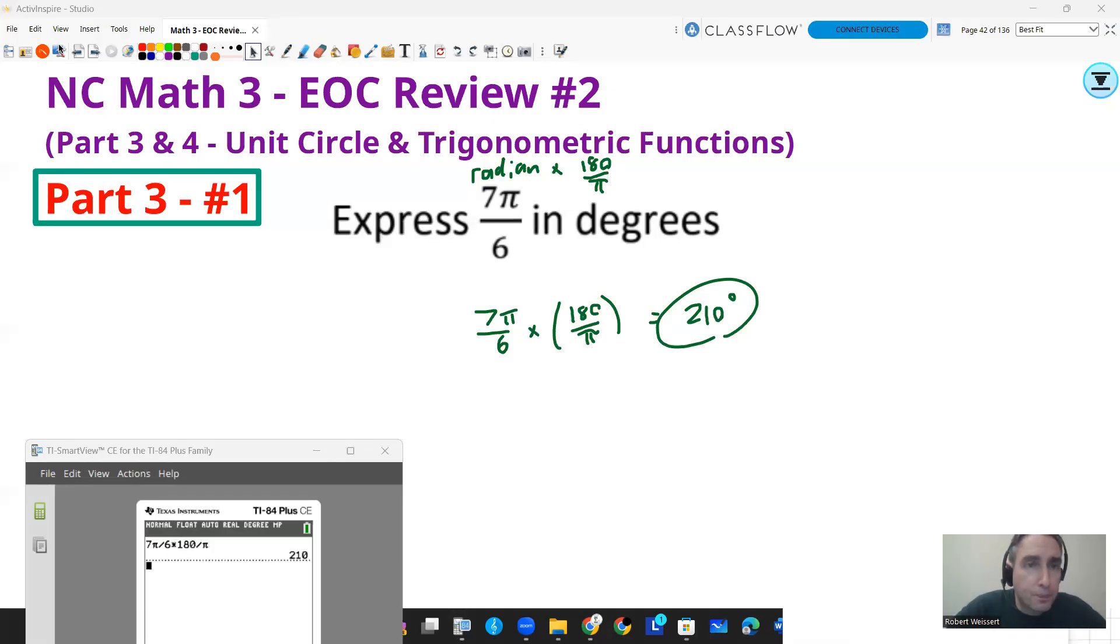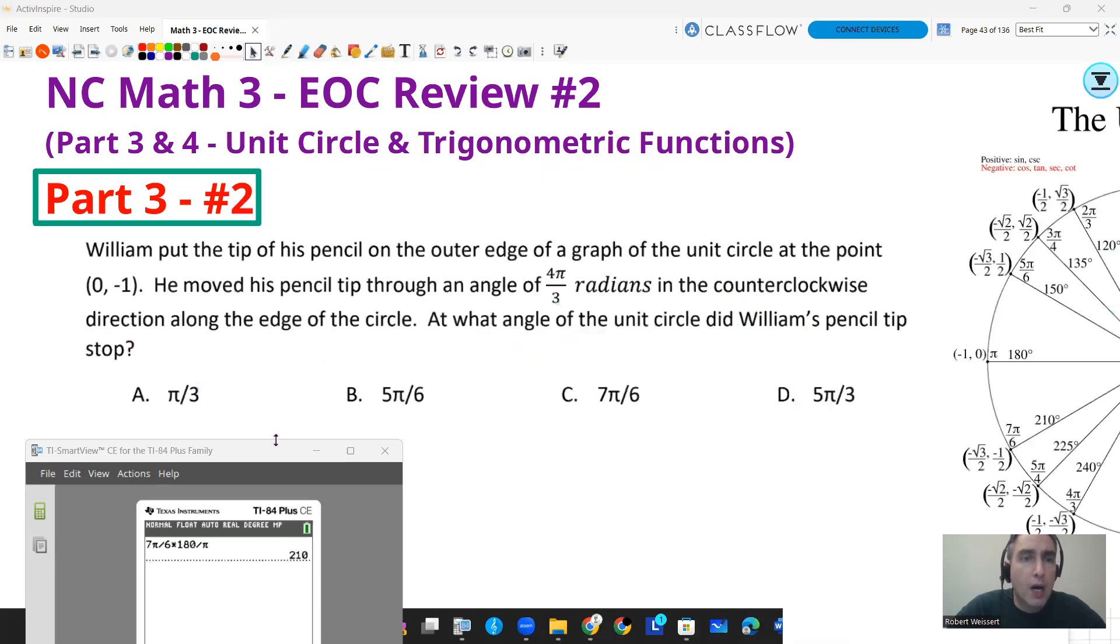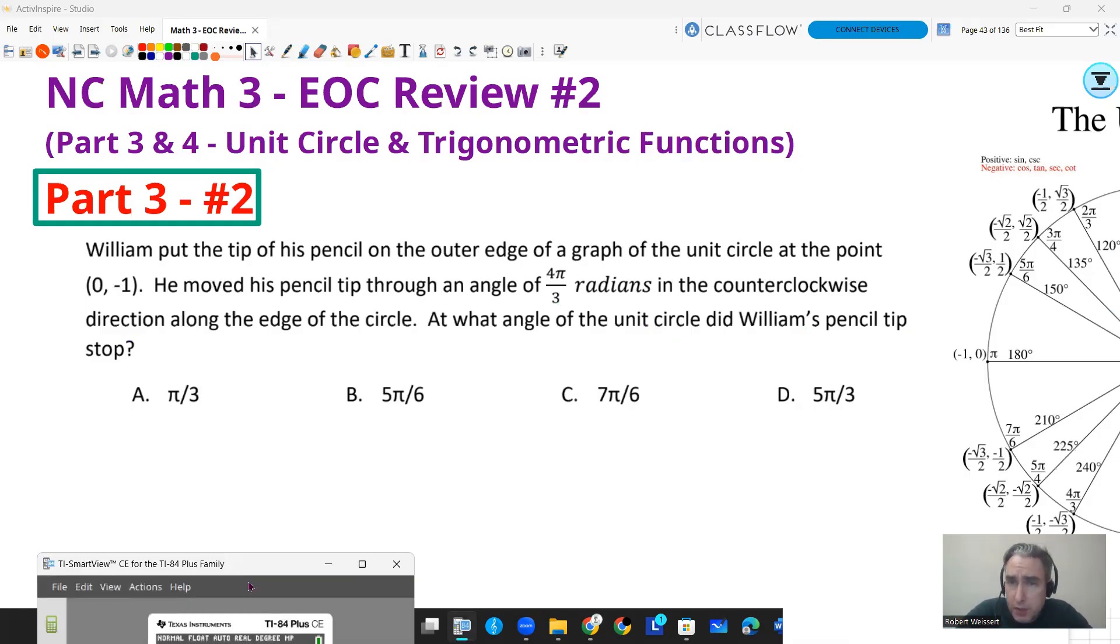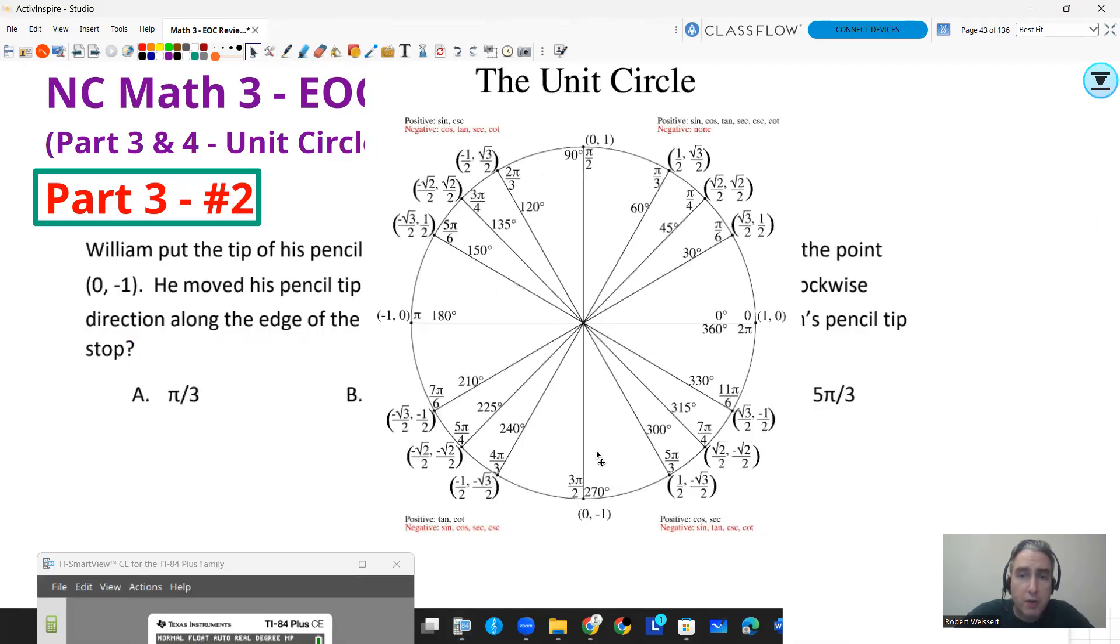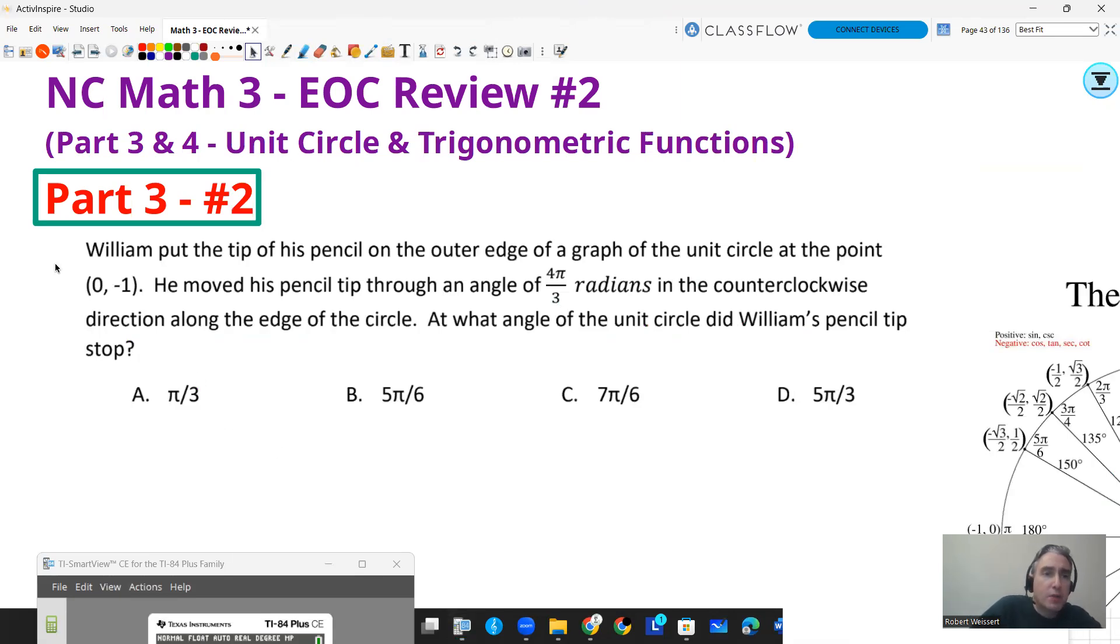Next question. This one is a lot. It says William put the tip of his pencil on the outer edge of a graph of the unit circle at the point (0,-1). He moved his pencil tip through an angle of 4π over 3 radians in the counterclockwise direction along the edge of the circle. At what angle of the unit circle did William's pencil stop? So first thing is we got to know where (0,-1) is. I have my unit circle pulled up here and (0,-1) is at 270 degrees. So if I think of where 270 is, that's going to be down here at the y-axis where it meets the bottom of the circle, and that's 270 degrees.